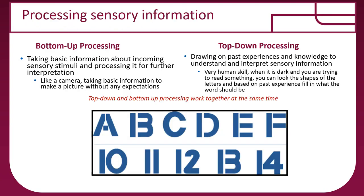When we're processing sensory information, two processes are going on at the same time: bottom-up processing and top-down processing. Bottom-up processing takes very basic information from your sensory stimuli and processes it for further interpretation — like a camera taking basic information to make a picture without any expectations. You're processing the little bits of visual or auditory information and putting it together from the bottom up to make sense of it.